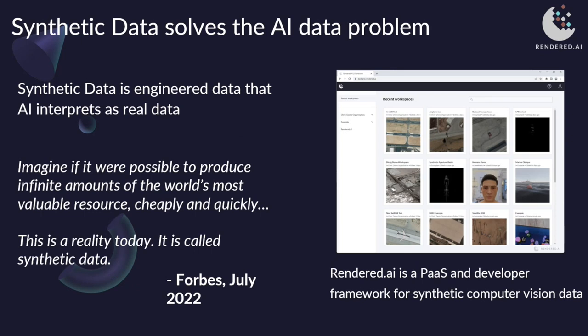One of the big reasons synthetic data is so powerful is that it has 100% accurate labels. Often with labeling of real data, there are certain types of data that are impossible or very difficult to label, and that inaccuracy can negatively impact the output of the AI model. Synthetic data solves all these problems. Synthetic data is engineered data that an AI model interprets as real, allowing that model to be trained to detect specific things. Because it's physics-based and rule-based, we can really design what that data looks like and be fully in control of what behaviors, objects, and events our AI is looking for.